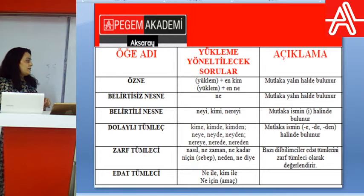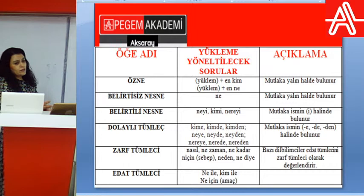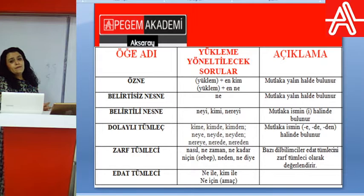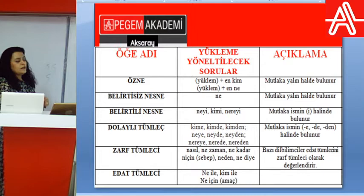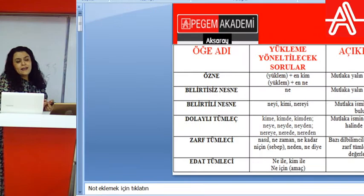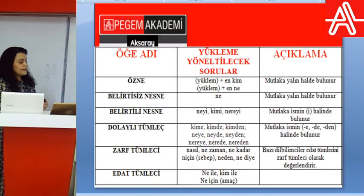İsmin hal eklerini işlerken söylemiştim, bu ekler cümlenin ögeleri açısından önemli. İsmin i hali dışında kalan e, de, den hallerini getirebiliyorsak, bu sorulara cevap veren sözcüğe dolaylı tümleç diyeceğiz. Yani kime, neye, neyde, kimden, neyden, nereden gibi sözcükler dolaylı tümleci veriyor.